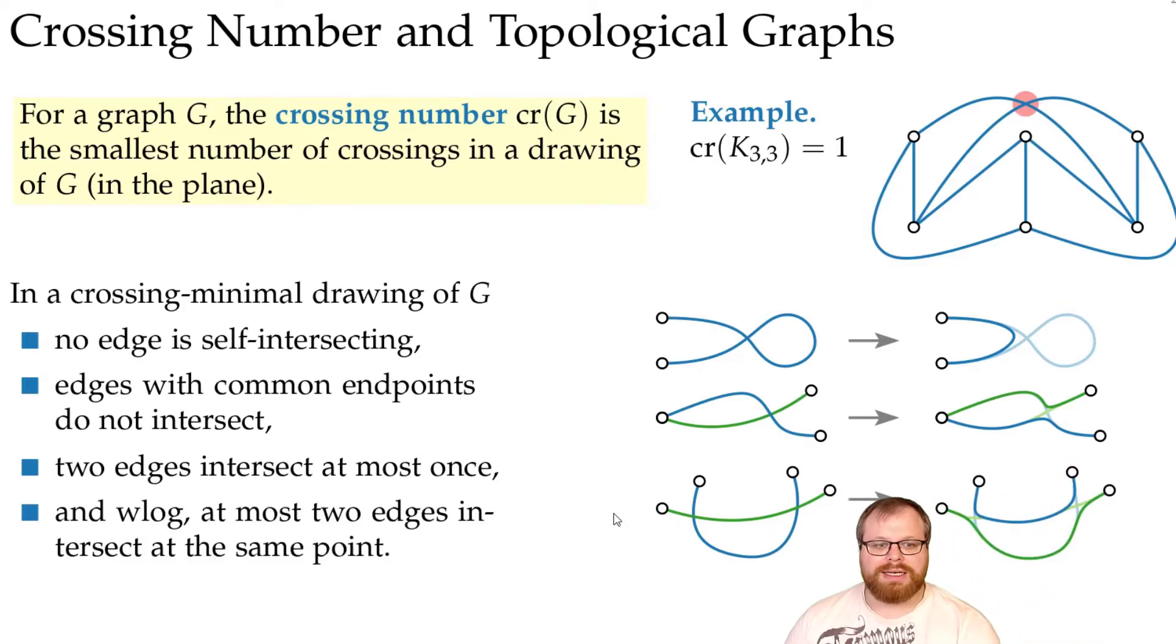And finally, we can assume that no two edges intersect at the same point. This is not necessarily true, but we can always adjust it by just moving one edge a tiny little bit without increasing the number of crossings. So this just makes it a bit easier.